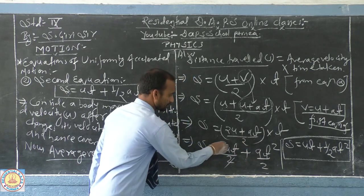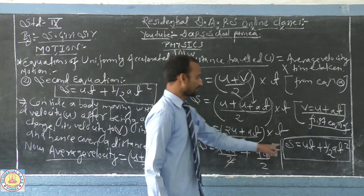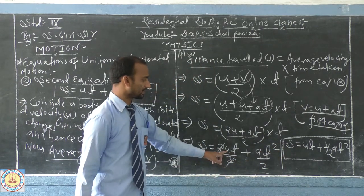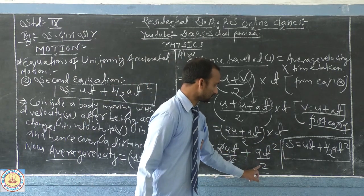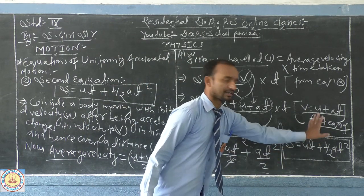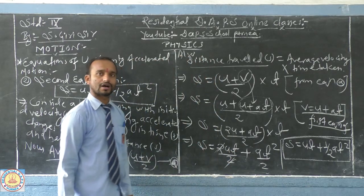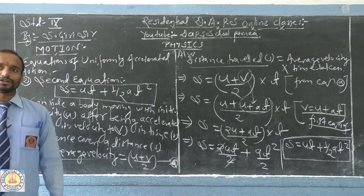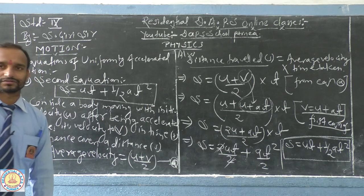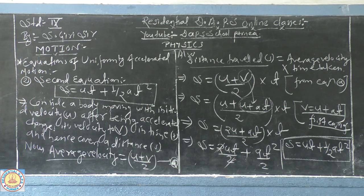You just cancel out, 2 cancels and therefore you will get s equal to u t plus half a t square. So this is the required second equation of uniformly accelerated motion.